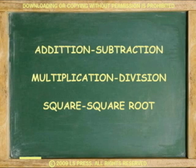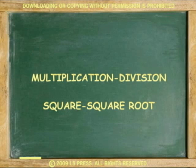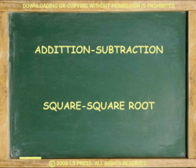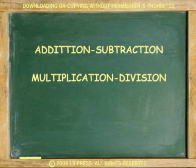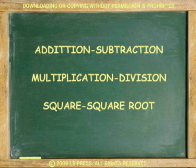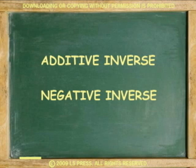The inverse property was mentioned before, which says we can pair the arithmetic operations we use in mathematics. Inversion means that pairs of numbers do the opposite. They undo each other. For example, when subtraction undoes addition, we call it the additive inverse or negative inverse property.